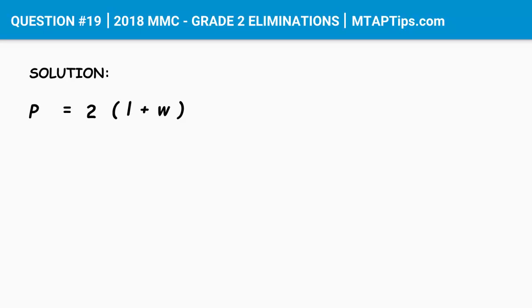It was mentioned in the question that the perimeter of a rectangle is 30 meters. So we'll have 30 equals 2 times length plus width.